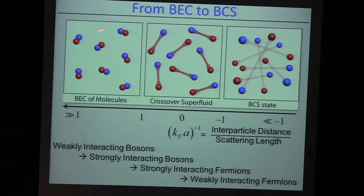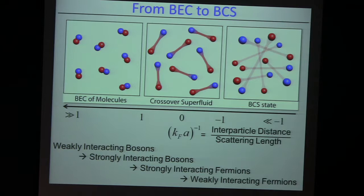With a distance between the two partners of the Cooper pair being much larger than the interparticle spacing. We can go to the other extreme — a positive scattering length that's sort of weak — then you have a bound state, a molecular bound state, that these two fermions can live in. So they will form this molecule, which is a boson. The ground state will be a Bose-Einstein condensate of molecules. And in the middle we have this interesting crossover superfluid where the pair size is on the order of the interparticle spacing.